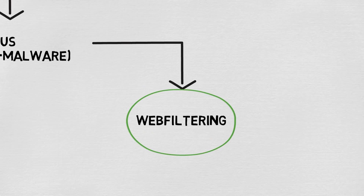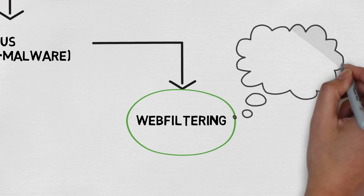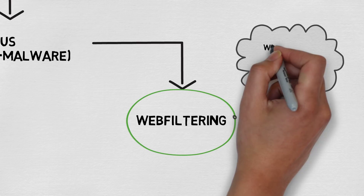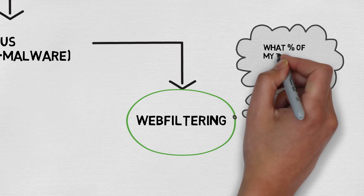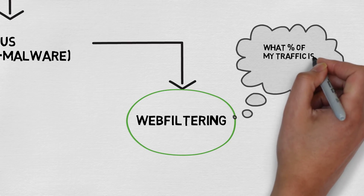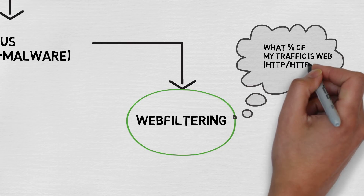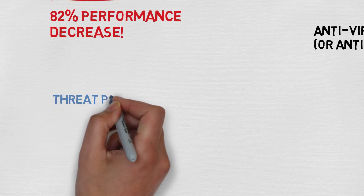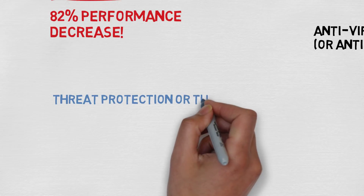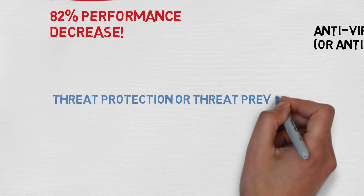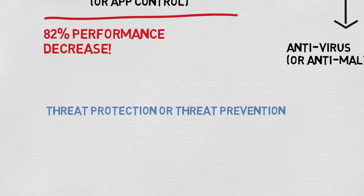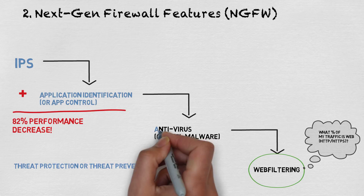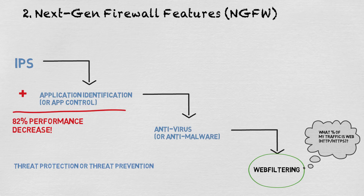Next, decide where on your network those features will be enabled. For example, if you decide you need web filtering, you'll only need to enable it on outbound web traffic. If web traffic accounts for 40% of your total circuit and you have a 1 gig circuit, you would effectively need about 400 megabits of web filtering capabilities. Most vendors won't have performance numbers for every permutation of next-gen features; instead they may have one performance number with several features enabled and call it something like 'threat protection' or 'threat prevention.' This can vary from vendor to vendor, so keep an eye out for what's included in their terminology.